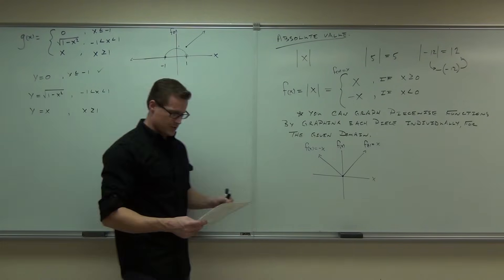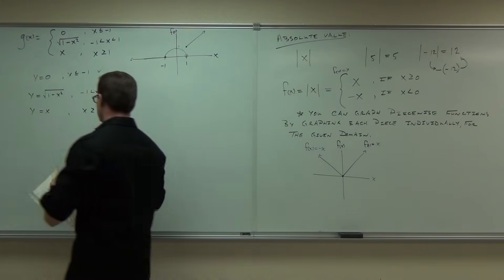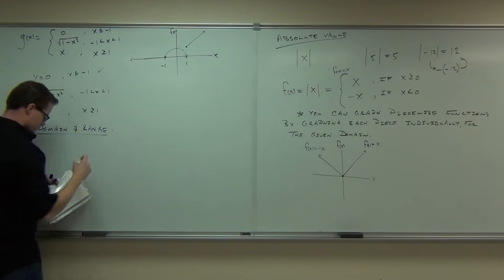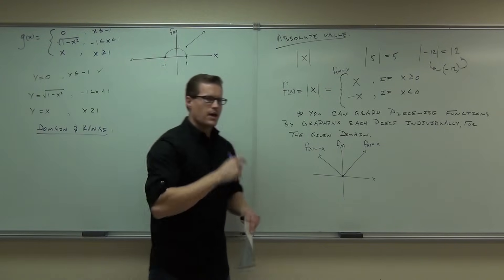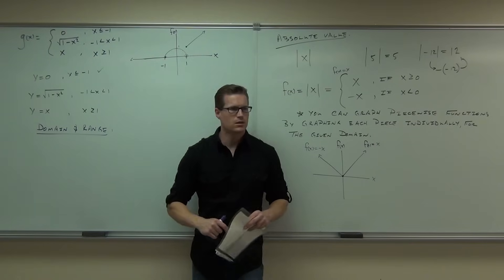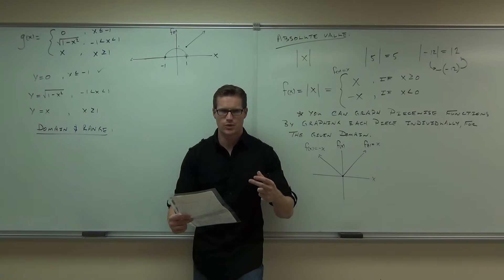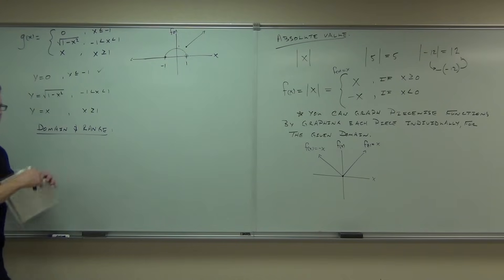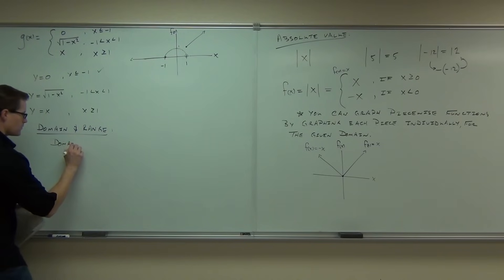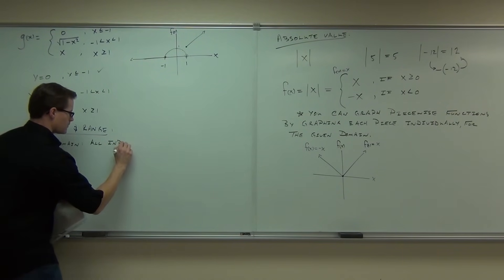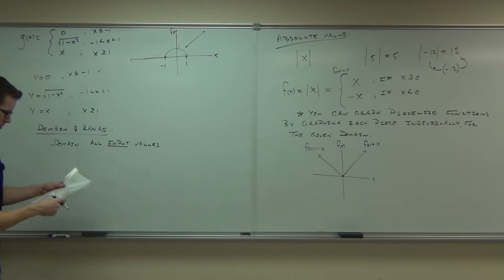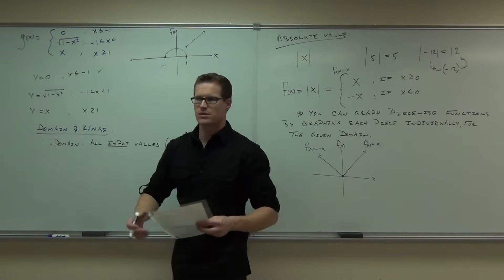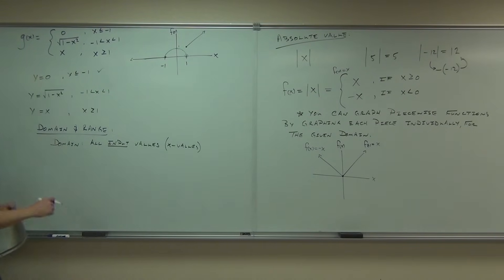The last thing we're going to talk about for this section is domain and range. Domain means all the values you can input into a function — usually x values. Range means all the possible output values — usually your y values or f(x). Most cases, especially in real life, there's some sort of constraint on the domain.